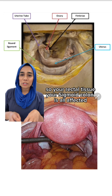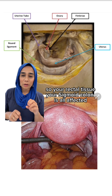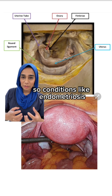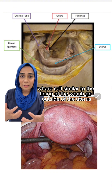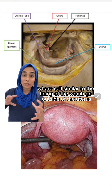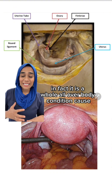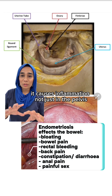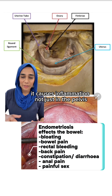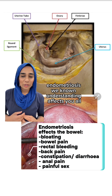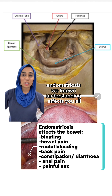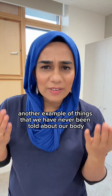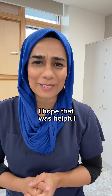It's also very close to your rectum and sigmoid colon, so all of that rectal tissue is affected too. Conditions like endometriosis, where cells similar to the lining of the womb grow outside the uterus, is actually a whole-body condition — it causes inflammation not just in the pelvis. We're now understanding that endometriosis affects the entire body. This is just another example of things we've never been told about our bodies.